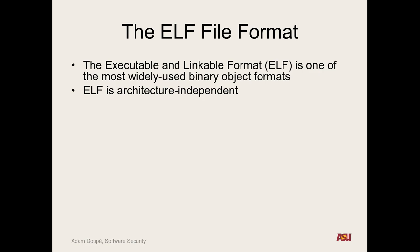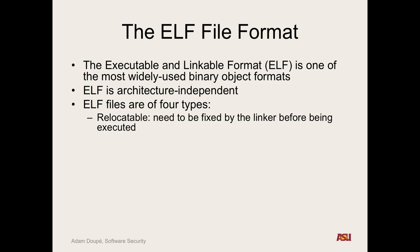At a high level, there are four types of ELF files. First, relocatable files — the linker hasn't done its job yet, so this code can be relocated to any address to be linked with other object files. When you compile a .c file, the .o binary object is a relocatable ELF file. This code doesn't have a specific address yet, but has all the information a linker needs to place it wherever it needs to go.